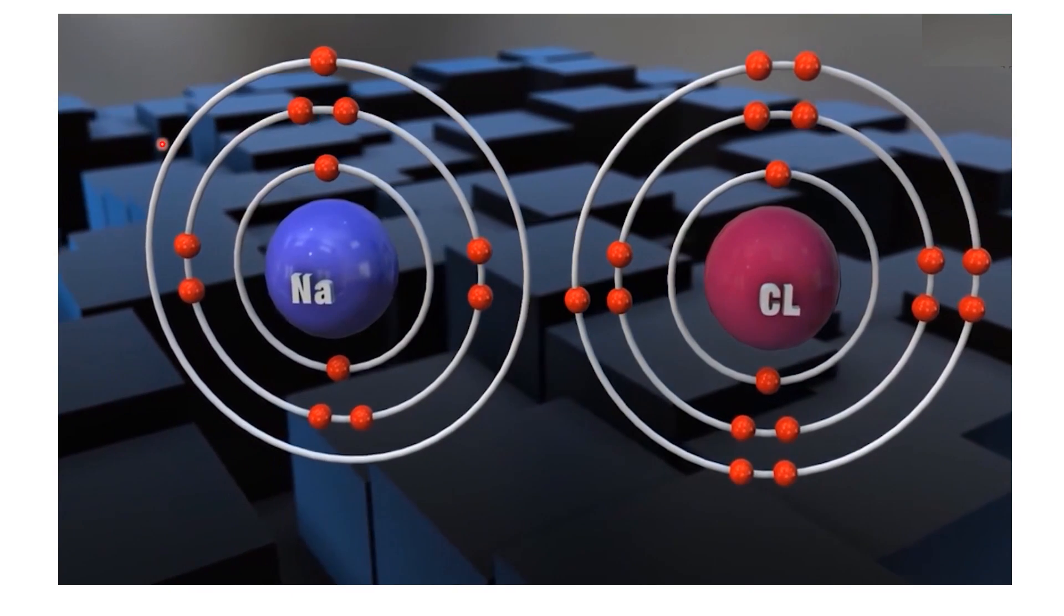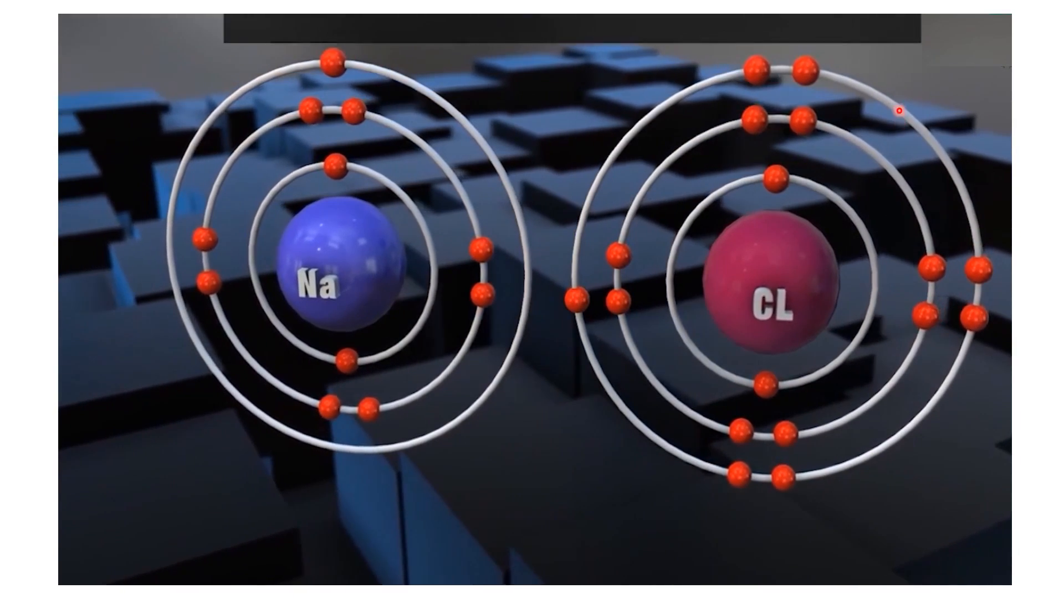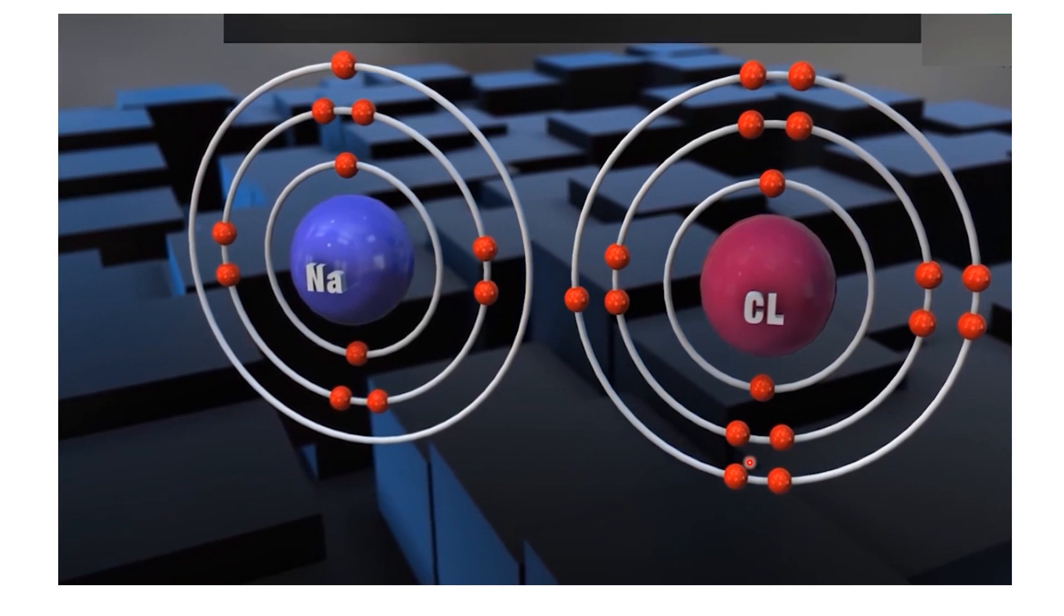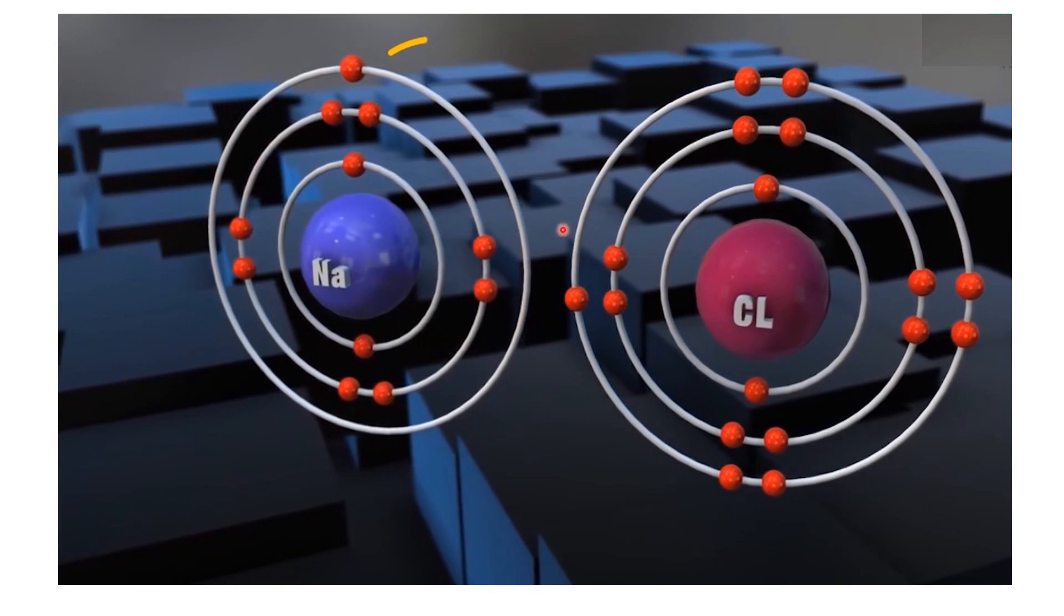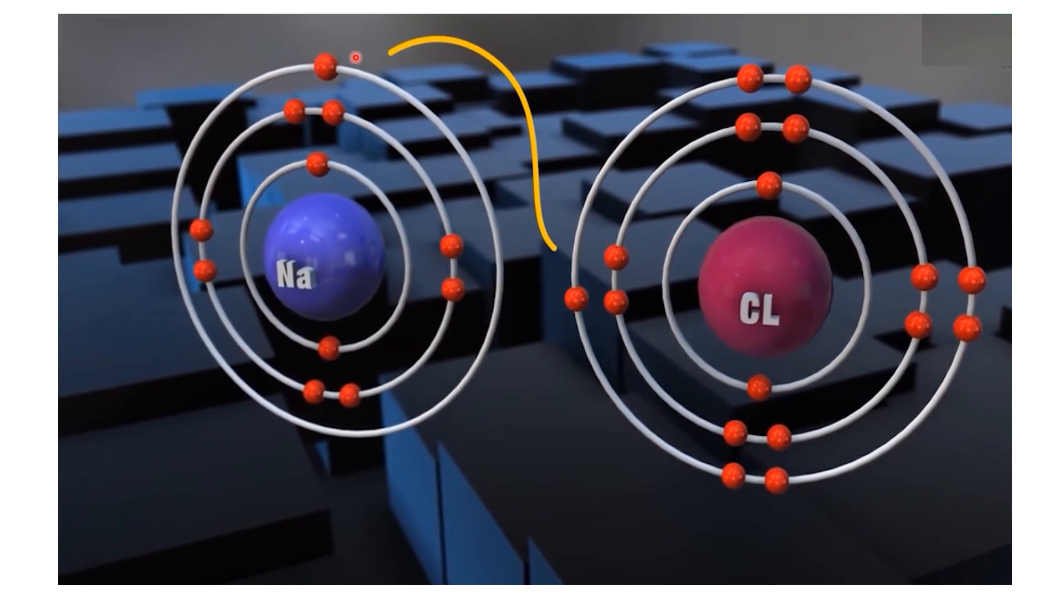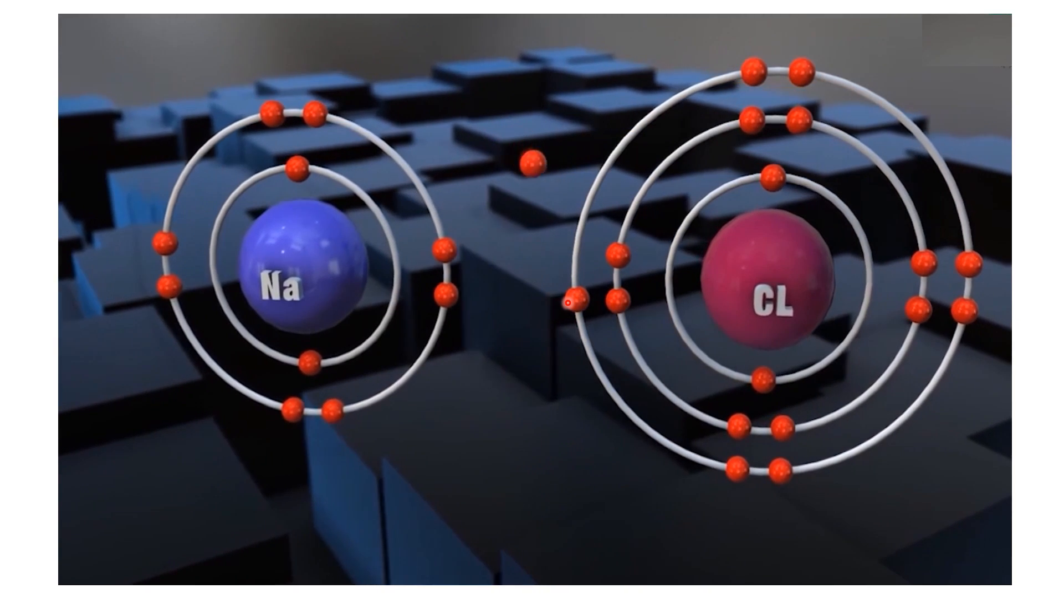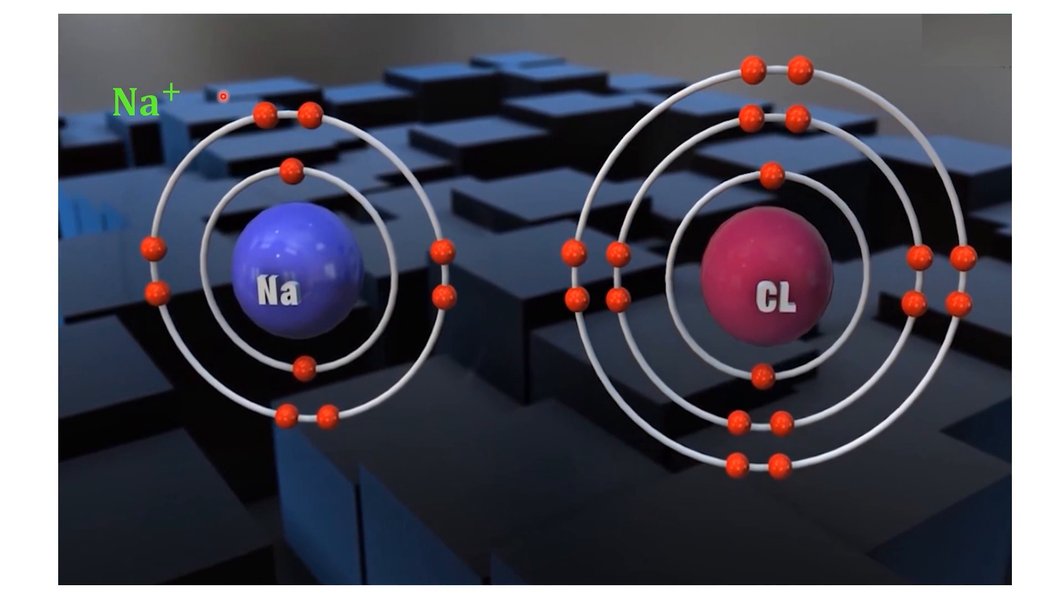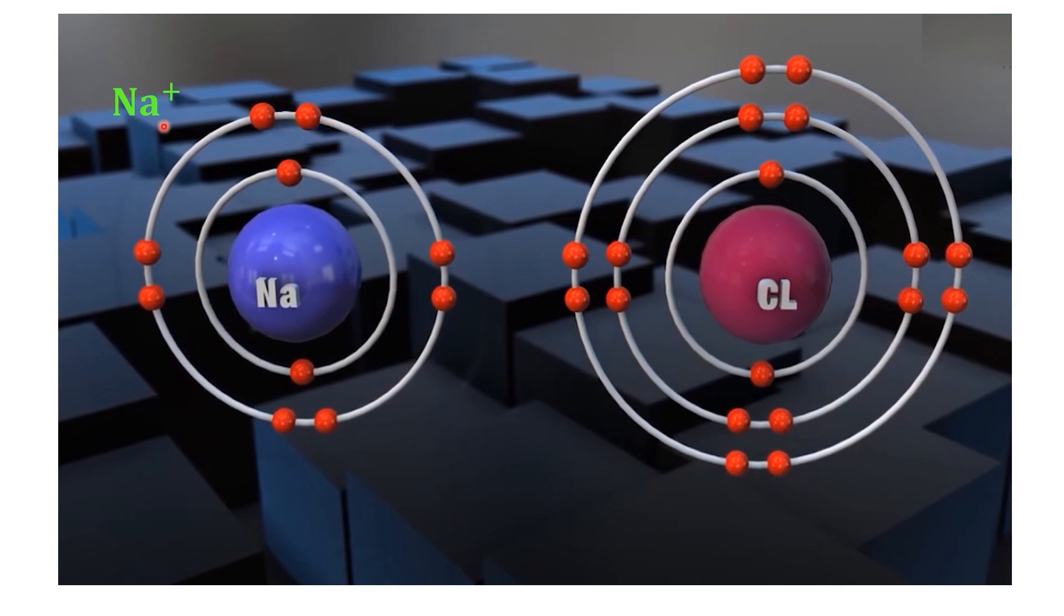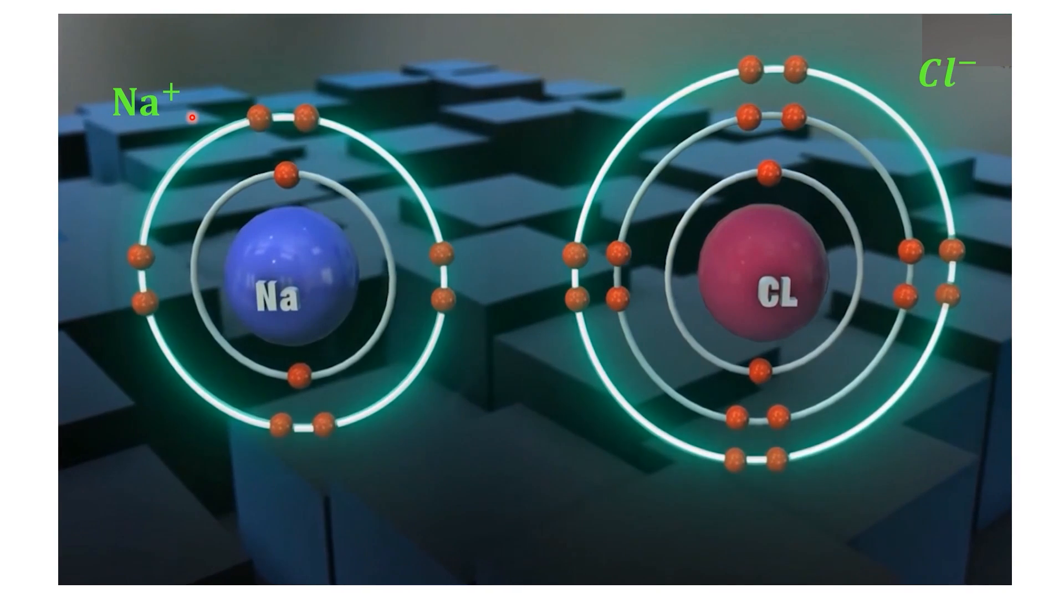To achieve stability, each atom needs to complete its outer shell. For sodium, this means losing the one electron in its M shell. By losing it, sodium reaches the stable electronic configuration of the noble gas neon and becomes a positively charged ion.